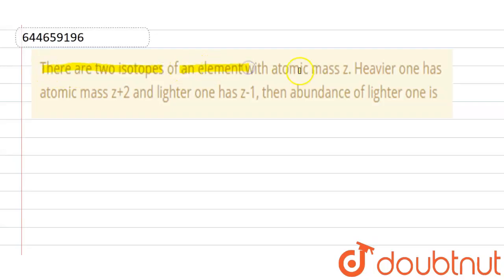isotopes of an element with atomic mass z. The heavier one has atomic mass z+2 and the lighter one has z-1. Then the abundance of the lighter one is? Let's see the solution. Firstly, let the percentage of